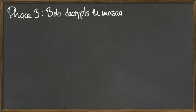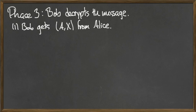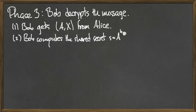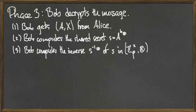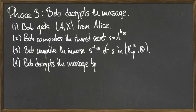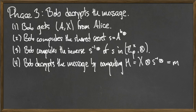The third and final phase consists of Bob retrieving and decrypting Alice's message. Bob retrieves the ordered pair (capital A, capital X) from Alice and computes the shared secret little s, which is equal to capital A to Bob's secret little b. In order to undo Alice's encryption, Bob needs to compute the inverse of the element little s inside of the multiplicative group Z mod p. Once Bob has s inverse, he decrypts Alice's message by computing capital M equals capital X times s inverse mod p, which is equal to m, Alice's original message.